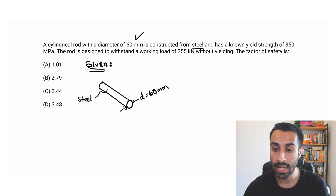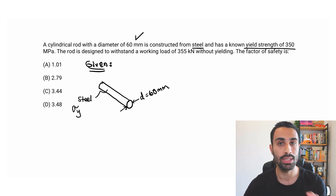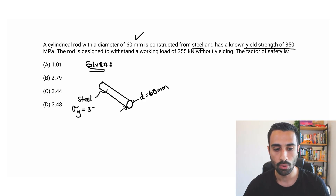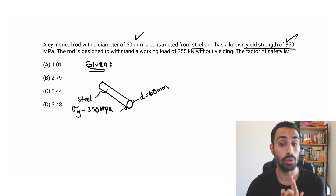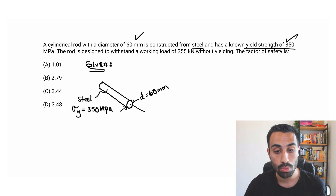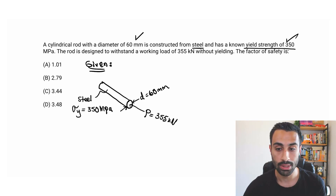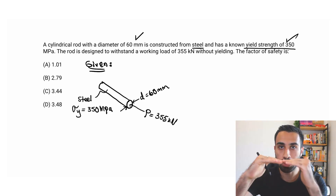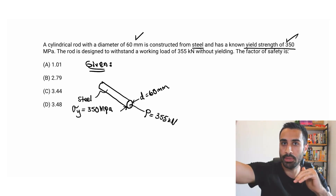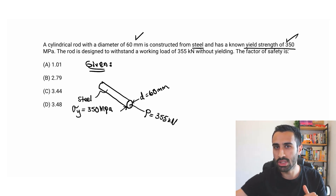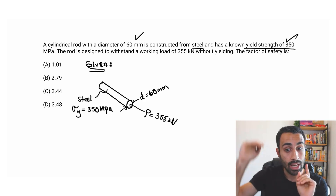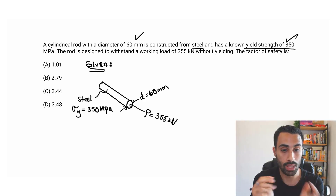The rod is made out of steel and has a known yield strength — we call that sigma Y, where sigma stands for stress and Y stands for yield. That value is 350 MPa. The rod is designed to withstand a working load P of 355 kN without yielding. The critical state we want to stay below is yielding — sometimes it's the ultimate stress, but in this problem we're focused on yielding.